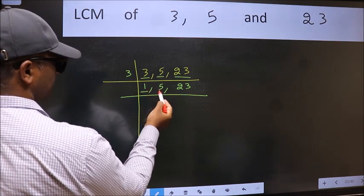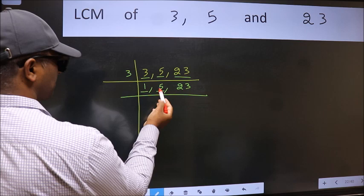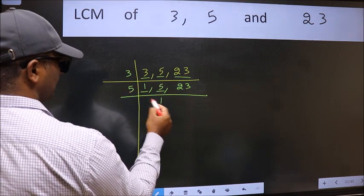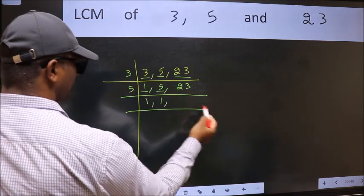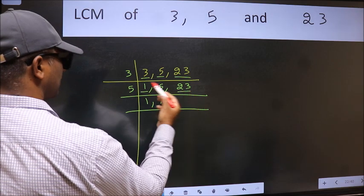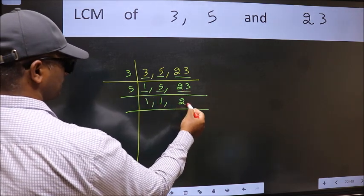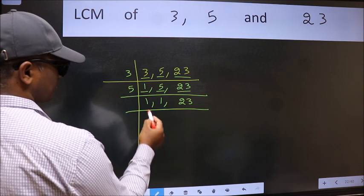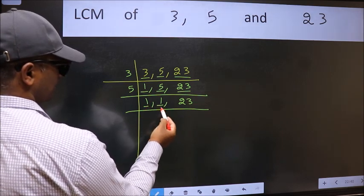So focus on the next number 5. 5 is a prime number so 5 divides 5. The other number 23 not divisible by 5 so we write it down as it is. Now we got 1 here and here.